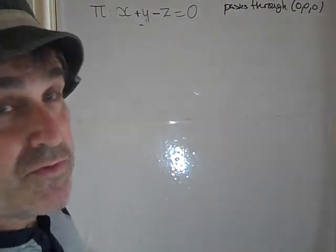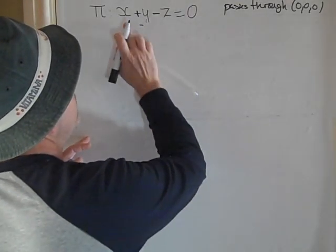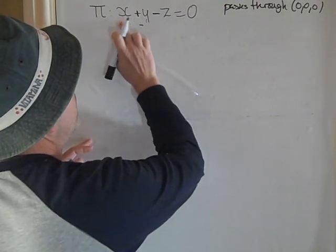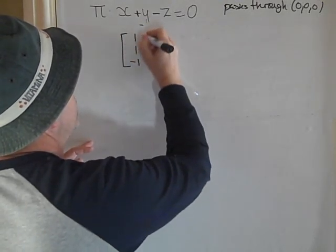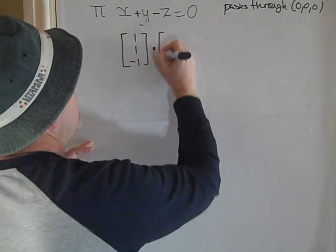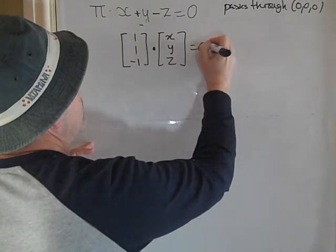So what we're going to do is, first of all, notice that we've got 1, 1 and minus 1, so that means that we can write that as [1, 1, -1] dot [x, y, z] equals 0.